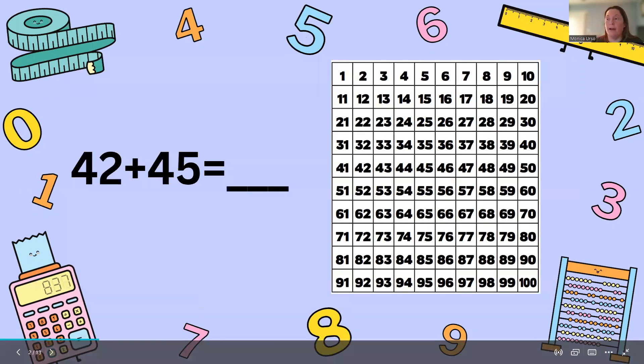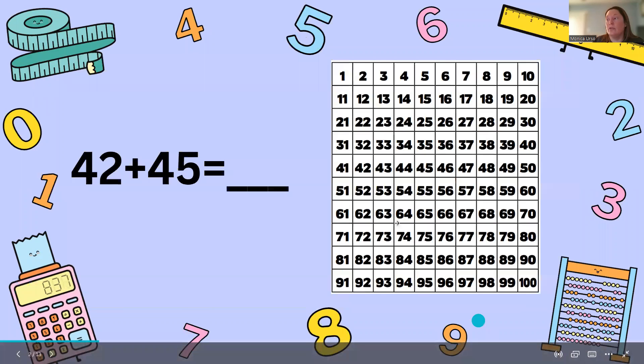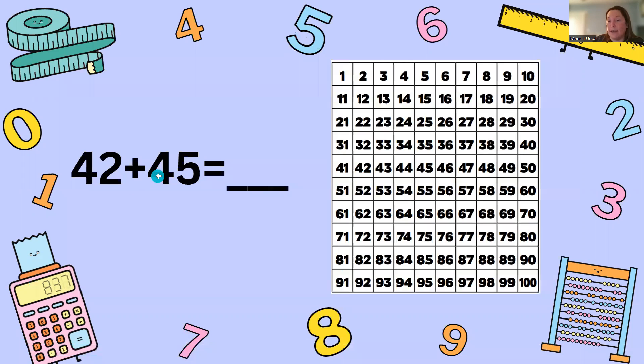So for our first problem we are going to find out what is 42 plus 45. So to start we go to our 100 chart and we begin with the number 42. We are going to break down 45 into tens and ones. So we're going to have 42 plus 40 plus 5.